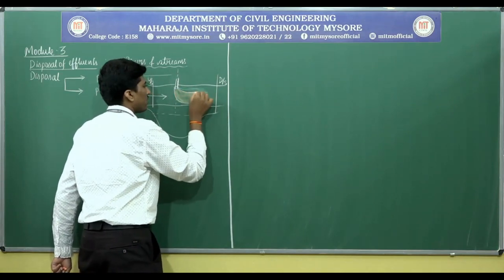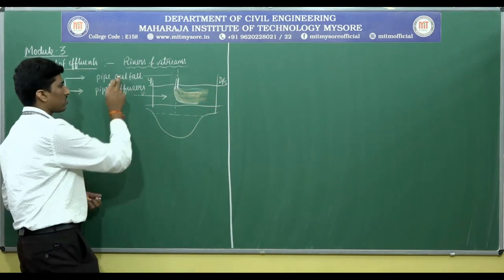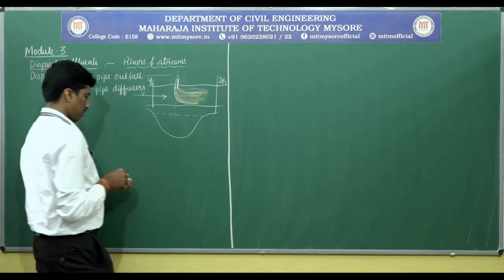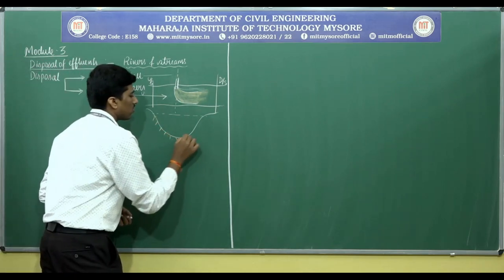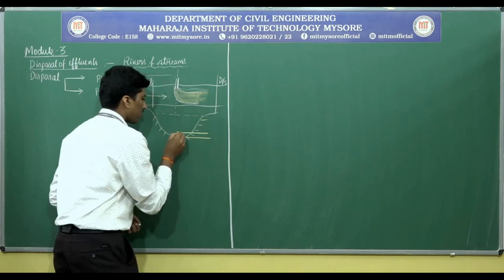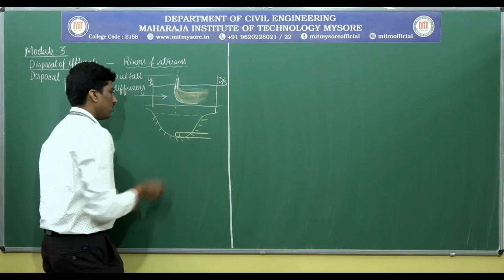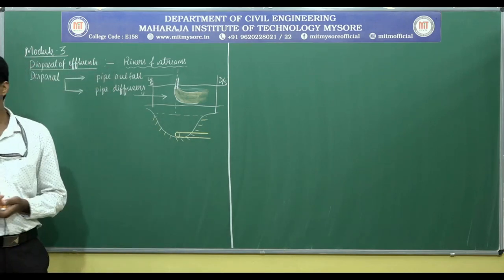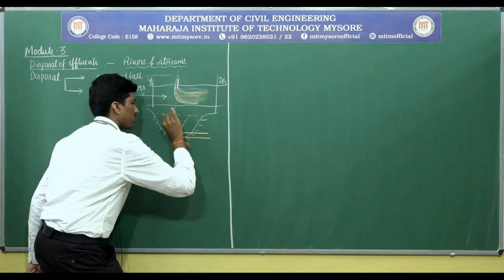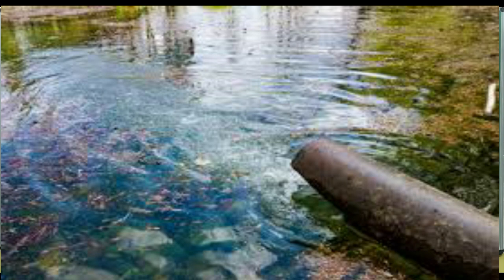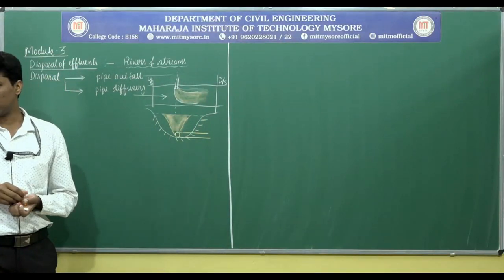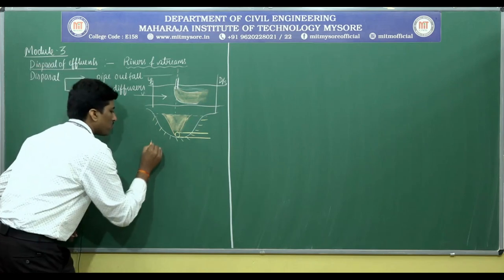Normally, this is the set of dispersion taking place. This kind of an outfall, we call it as a pipe type of an outfall, normally provided at the bottom portion — especially the bottom portion, pipes are covered. If it is in the case of the bottom, the dispersion takes place in the form of a cloud nature, like this pattern. This is the disposal condition; we call it as disposal through pipe outfall.